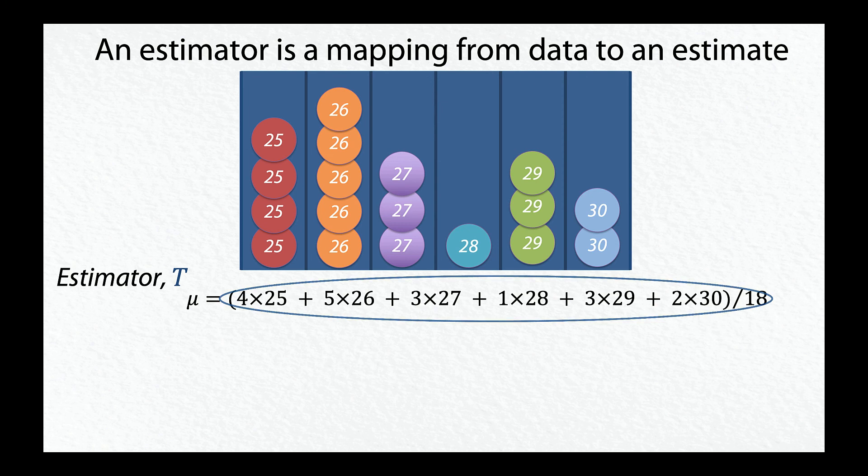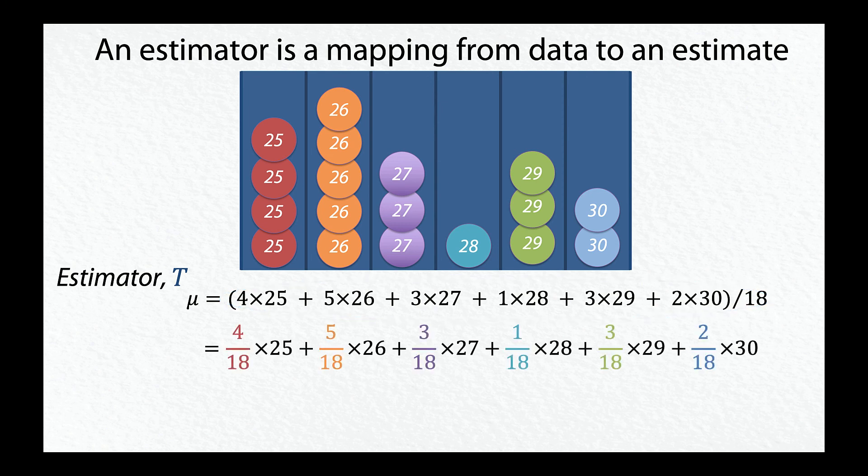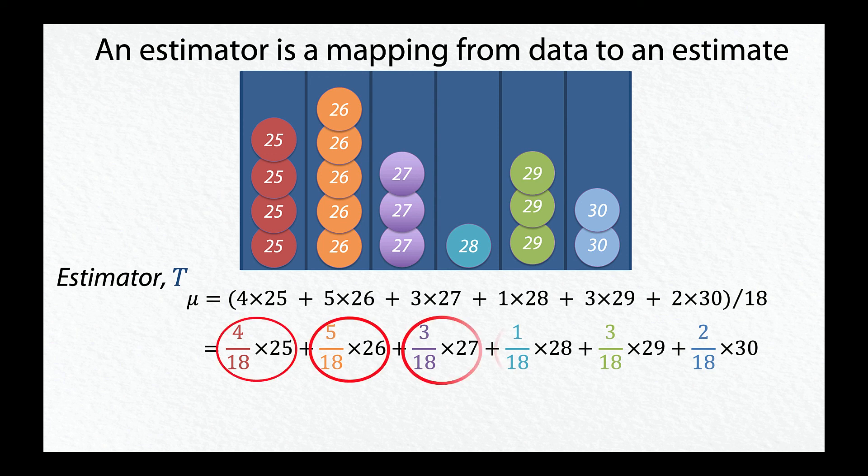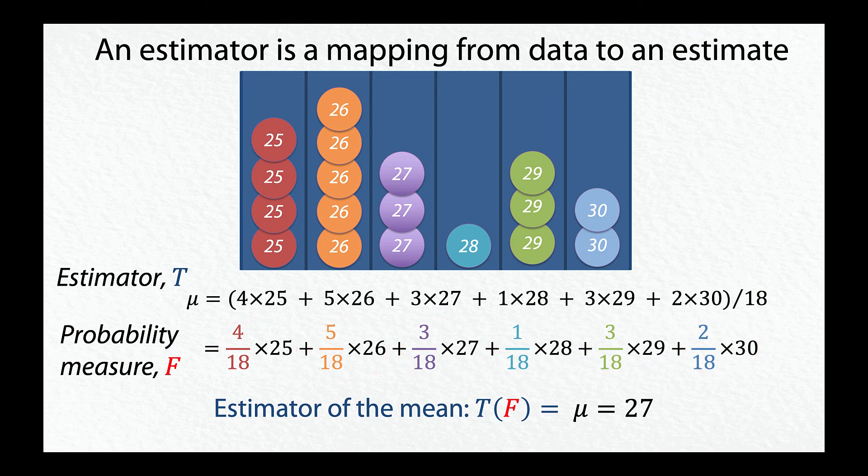We can rewrite the equation by distributing the 18 in the denominator. Each term in this sum consists of a value and its associated weight. Taken together, they comprise a probability measure, f. Applying the estimator to our probability measure yields mean, mu. In this case, t of f equals 27.